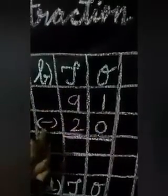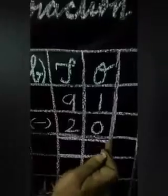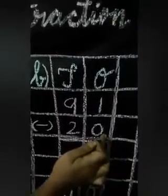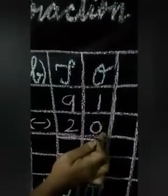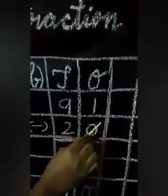Next one — ones and tens: 91 minus 20 is equal to how much? Now we are going to find out the answer. Let's find the ones first: 1 minus 0. As we have already discussed, when we subtract any number with 0, the same number is the answer — so just write 1.